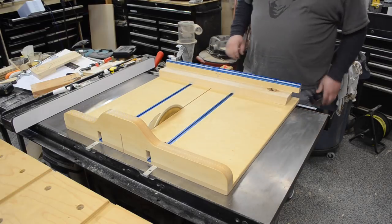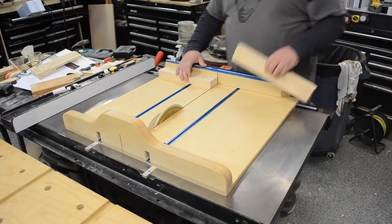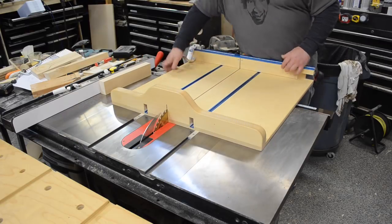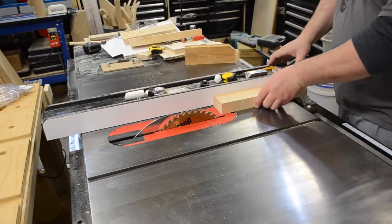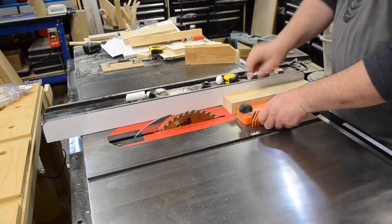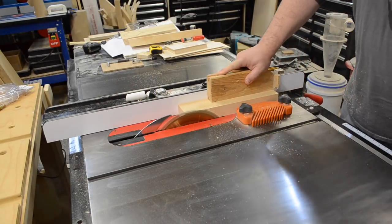Then all I had to do is bring it over to my crosscut sled and slice up the material to the appropriate size. Then I brought my table saw fence over and just trimmed up one side to make sure that it was 90 to the surface.